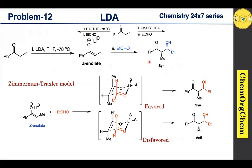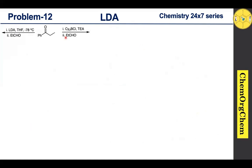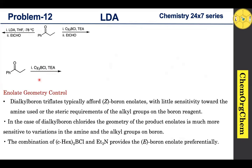From the favored transition state we get the syn-aldol product, and from the disfavored we get the anti-aldol product. So with E-enolate reacting with propanaldehyde, syn-aldol is the major product — this is the answer for compound A. Now for the next question based on boron enolate: when you use chlorodicyclohexyl borane and triethylamine, which enolate — E or Z — is formed? Dialkyl boron triflates typically afford Z-enolate as the major product, while the amine also plays a role. For dialkyl boron chloride, the enolate geometry is more sensitive to the amine used, but in general the combination of dicyclohexyl boron chloride and triethylamine preferentially produces E-boron enolate.